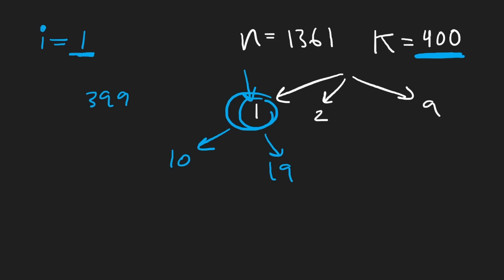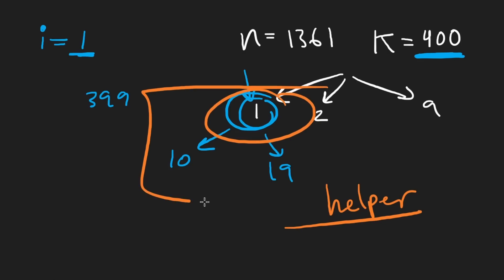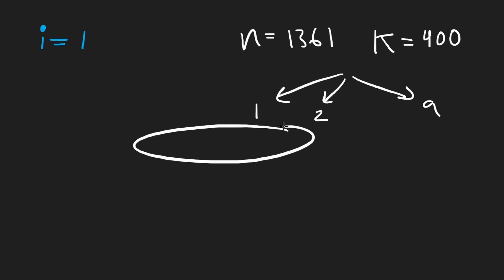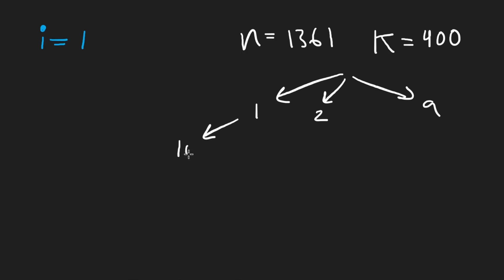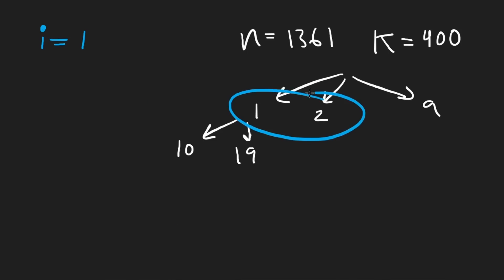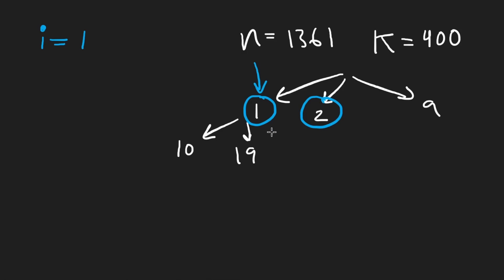So there are two choices: either we go down, or we move to the right. If we move down, we've clearly eliminated everything to the right in the tree. If we move to the right, we eliminated the current subtree. Now, if you know that, you pretty much know most of the problem — we just need to figure out that helper function: how exactly do we calculate the number of nodes in a particular subtree?